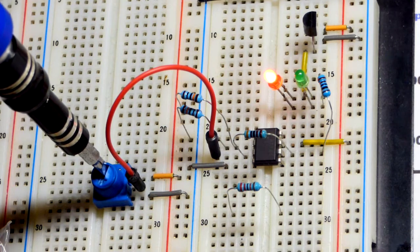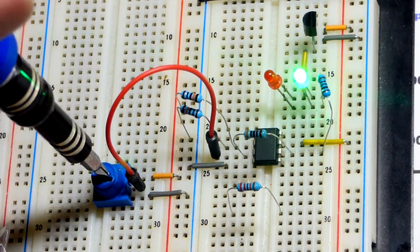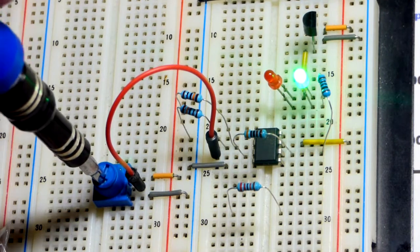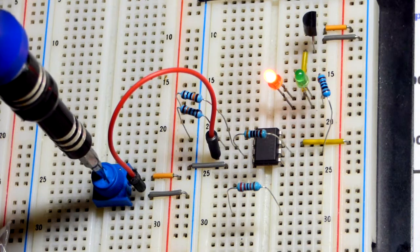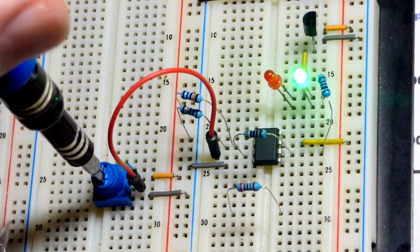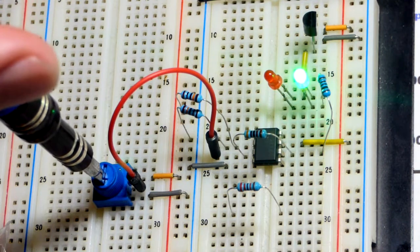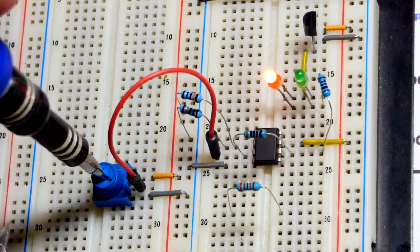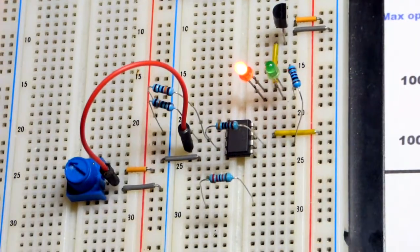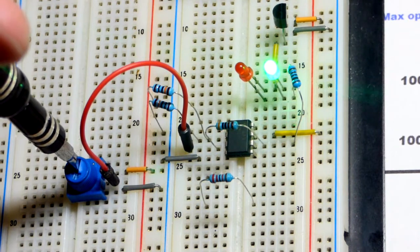We have a high output there. You can see we're getting fairly close to the negative rail before it went low. Now we have to get fairly close to the positive rail before it goes high right there. It's real clear—I have to turn this trim pot very far before I get to the upper threshold there and the lower threshold right there.